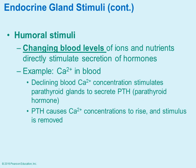Humoral stimuli involve changing blood levels of ions and nutrients. For example, declining calcium concentration in the blood stimulates the parathyroid gland to secrete parathyroid hormone, which ultimately causes calcium concentration to increase in the blood. As that calcium concentration increases, it then inhibits further release of parathyroid hormone. So with humoral stimuli, it's the concentration of ions or nutrients — in this case calcium — that triggers hormone release.